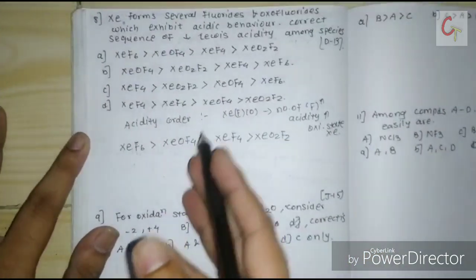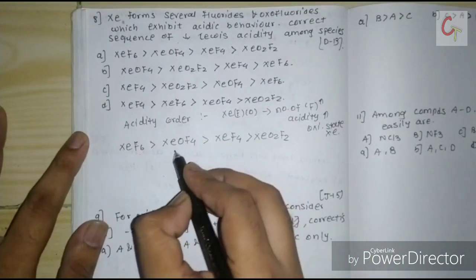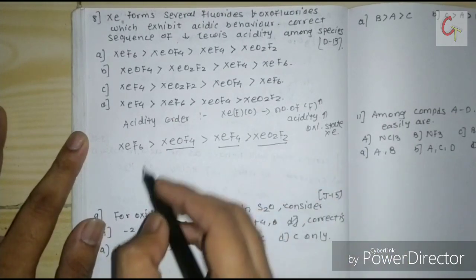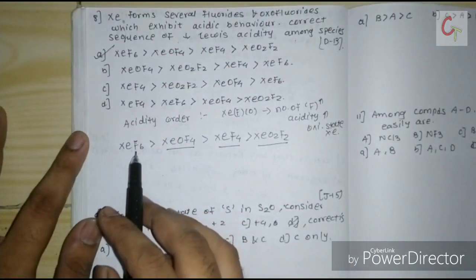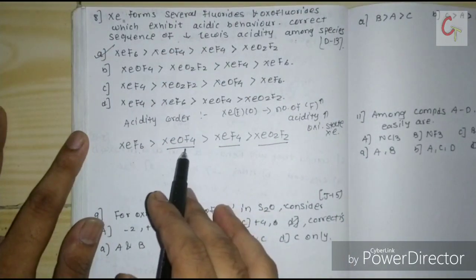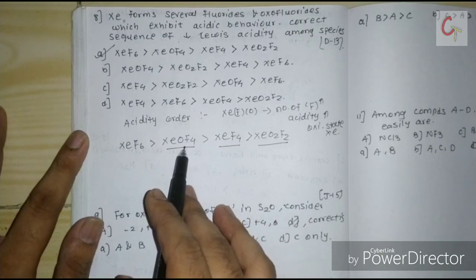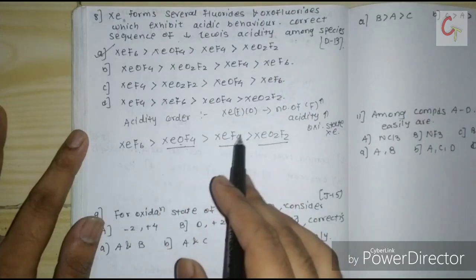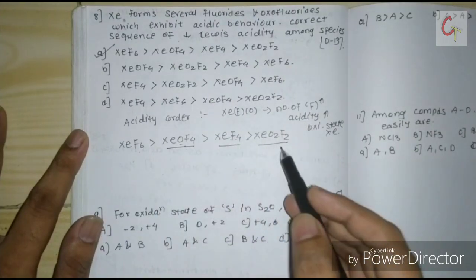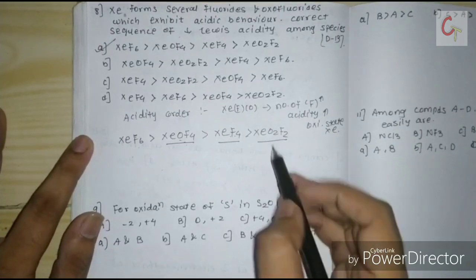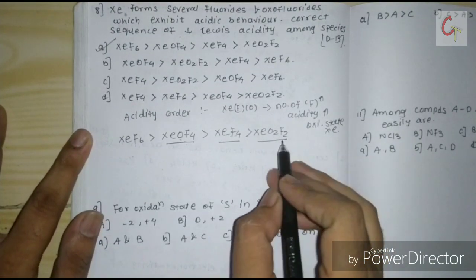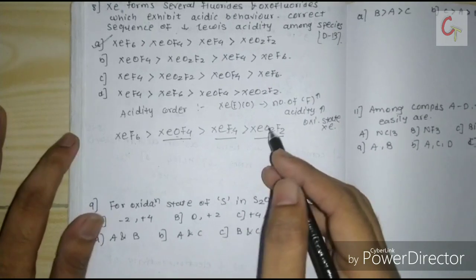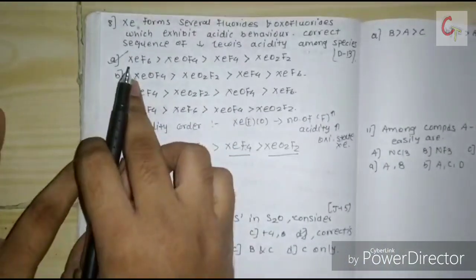After XeF4 comes XeO2F2, because when oxygen replaces fluorine the acidity decreases — two positions occupied by oxygen instead of fluorine. The full decreasing Lewis acidity order places the highest-fluorine compound first, then oxofluorides in order of fluorine count. The correct option is A.